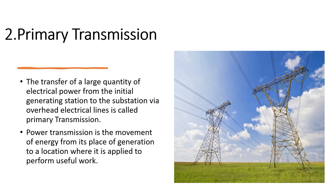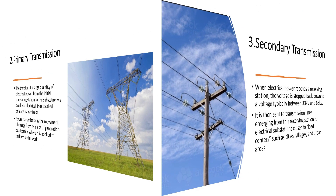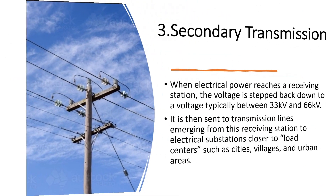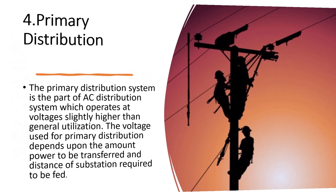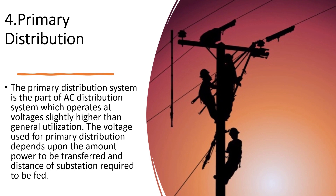Power transmission is the movement of energy from its place of generation to a location where it is applied to perform useful work. When electrical power reaches a receiving station, the voltage is stepped back down to a voltage typically between 33 kV and 66 kV. It is then sent to transmission lines emerging from this receiving station to electrical substations closer to load centers, such as cities, villages, and urban areas. This is called secondary transmission.